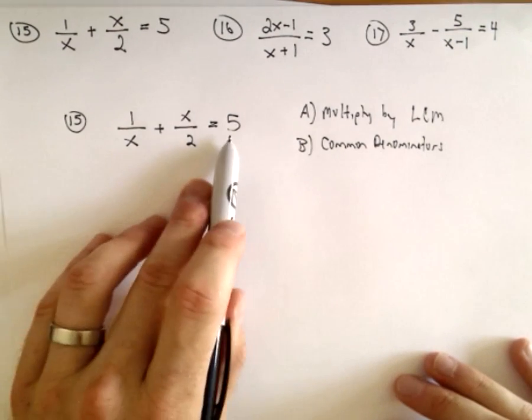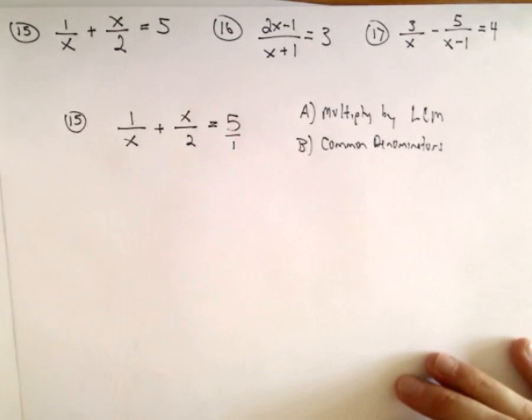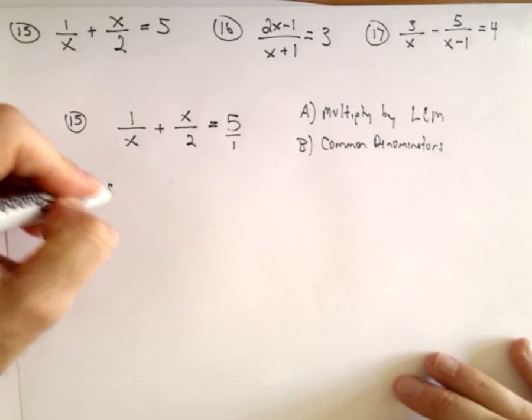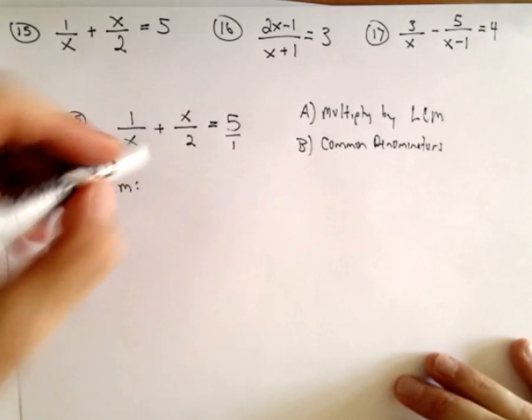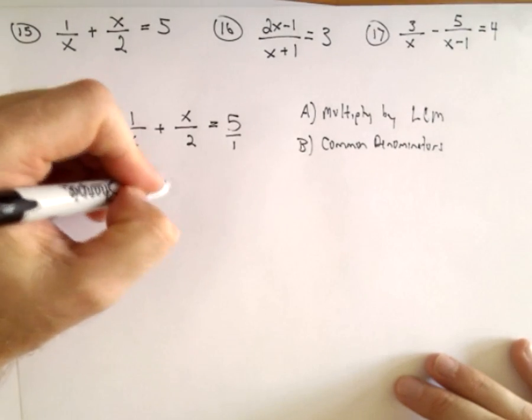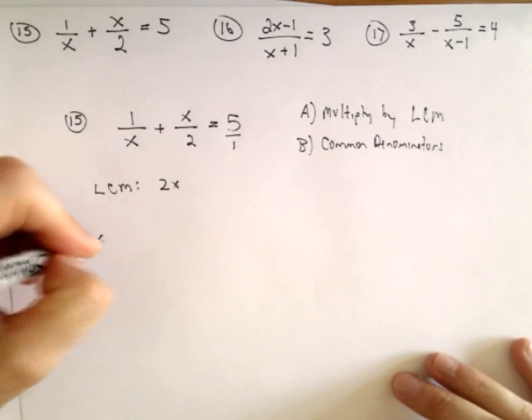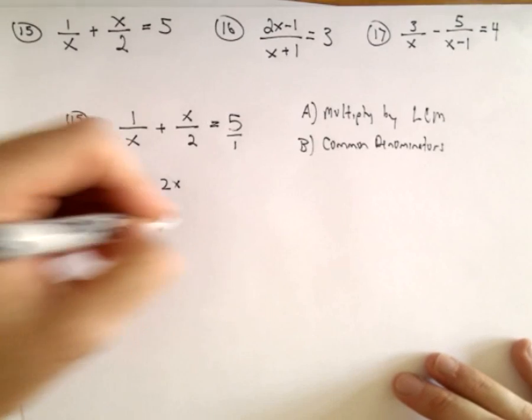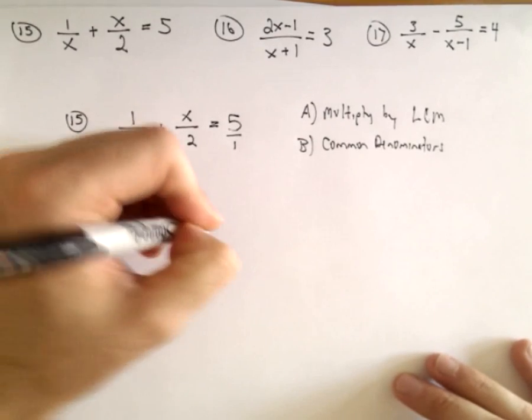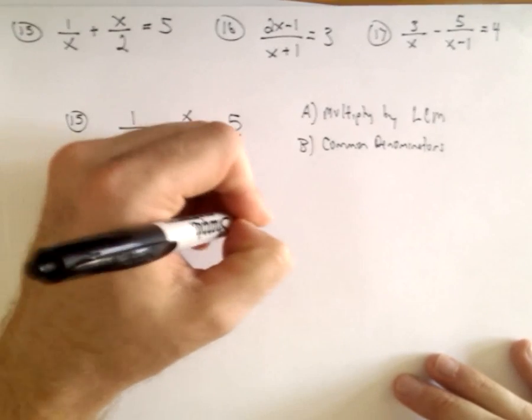I look at the denominators, I see an x, a 2, and you can think about this as being over 1. So the least common multiple of x, 2, and 1 would be 2x.